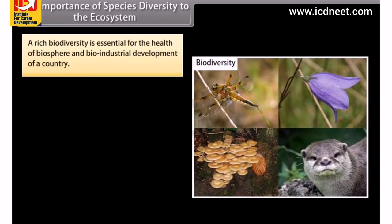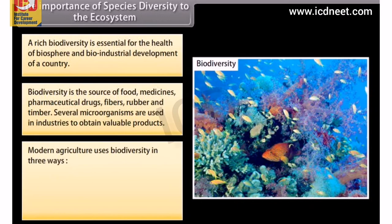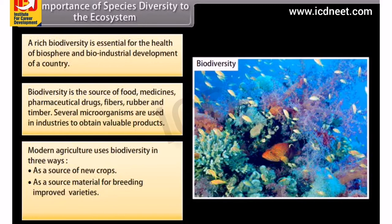The importance of species diversity to the ecosystem. Rich biodiversity is essential for the health of the biosphere and bio-industrial development of a country. Biodiversity is the source of food, medicines, pharmaceutical drugs, fibres, rubber and timber. Several microorganisms are used in industries to obtain valuable products. Modern agriculture uses biodiversity as a source of new crops, as source material for breeding improved varieties, and as a source of new biodegradable pesticides.